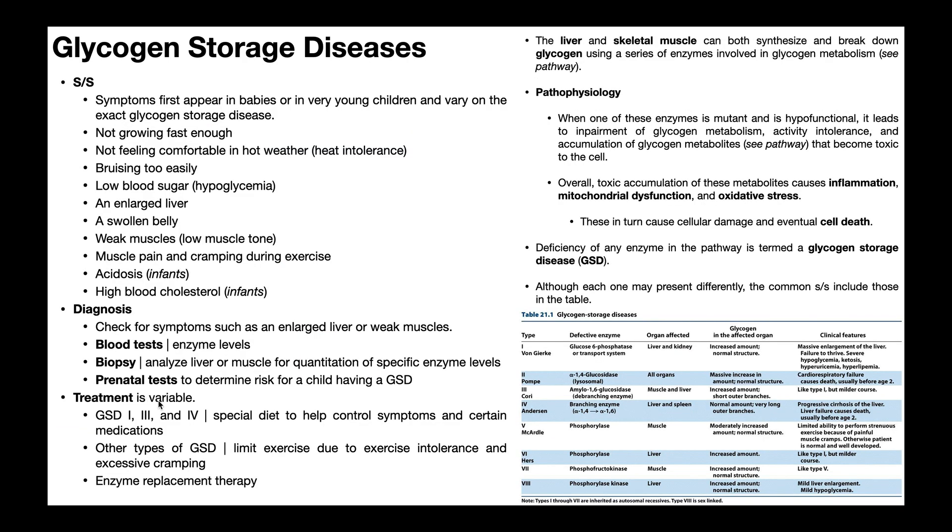Now the treatments for glycogen storage diseases are variable. For glycogen storage diseases 1, 3, and 4, normally the person's going to follow a special diet to help control the symptoms, and then also certain medications. For other types of glycogen storage diseases like type 5 and any of these others that are similar to type 5, like 7 and then 9 that we talked about earlier, basically the person's going to limit their exercise, especially in the heat, due to that exercise intolerance and excessive cramping. And then advancements in modern medicine have given us enzyme replacement therapy. So if you have hypofunctional enzymes, you can actually replace the enzymes with fully functional ones to help circumvent the effects of the deficiency.